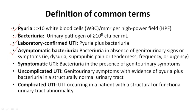Asymptomatic bacteriuria is defined as bacteriuria in absence of genitourinary signs or symptoms, which include dysuria, suprapubic pain or tenderness, frequency or urgency. Symptomatic UTI is defined as bacteriuria in the presence of genitourinary symptoms. Uncomplicated UTI is defined as genitourinary symptoms with evidence of pyuria plus bacteriuria in a structurally normal urinary tract. Complicated UTI is defined as a UTI occurring in a patient with structural or functional urinary tract abnormalities.